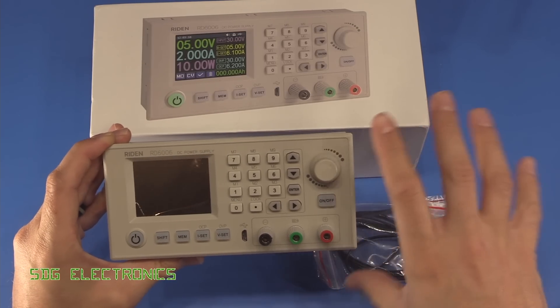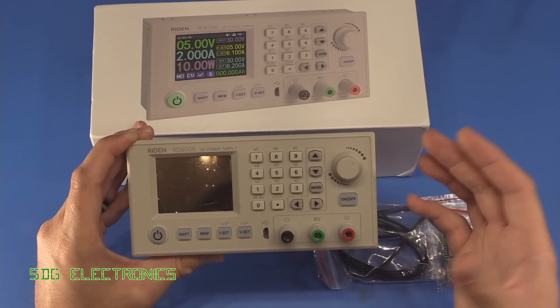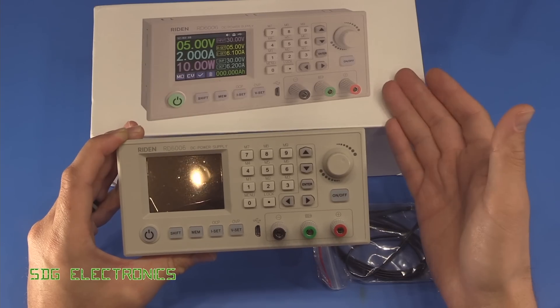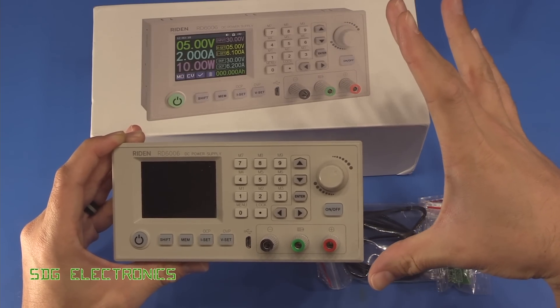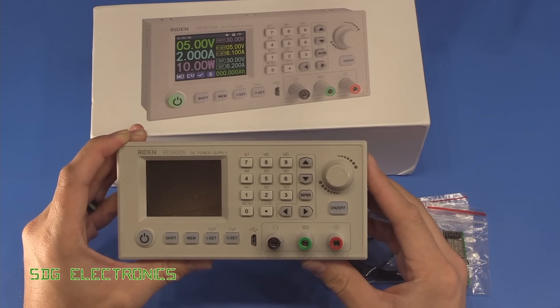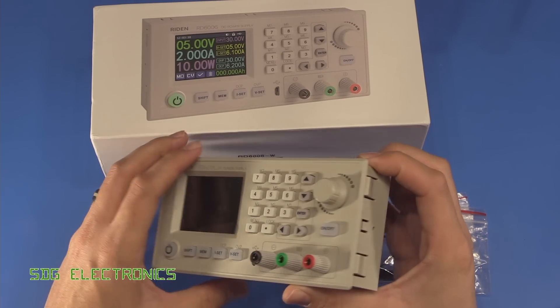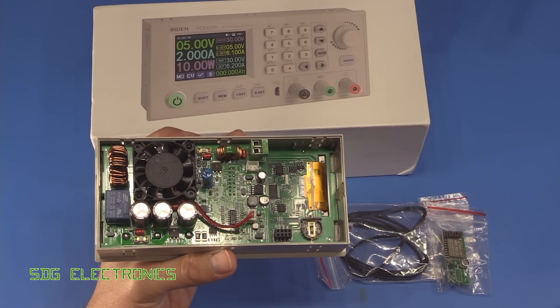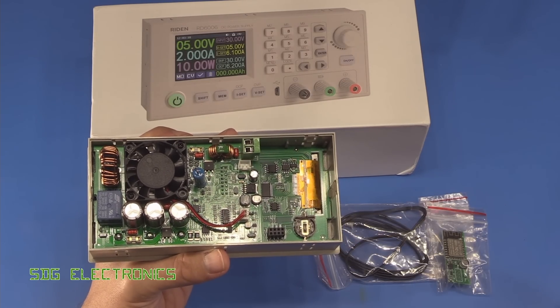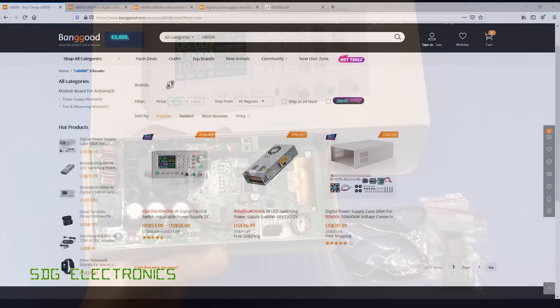The idea is that you can either integrate this into your own caseworks, so you could have a whole bank of these if you needed them, or you can buy a specific case from Raiden. They do a single height version and a double height as well if you want a dual power supply situation. Let's have a look at the listing on Banggood.